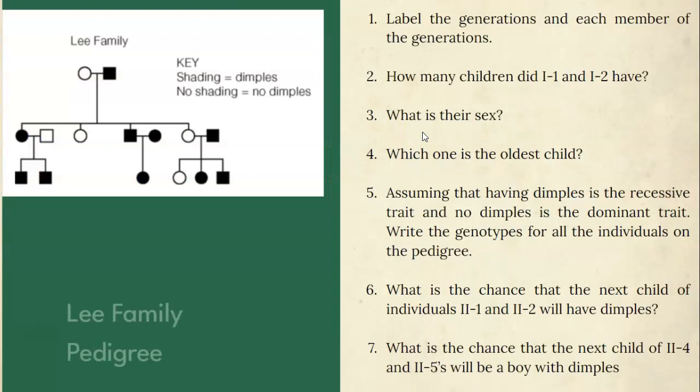Is this child male or female? I would like you to write your answer in. I hope you chose male, because it is not shaded so it means they do not have the trait, and it's a square so it means it's male. We're going to look at an example and work through it together, and then there will be another video going through all of the examples in your notes so you can try them on your own.